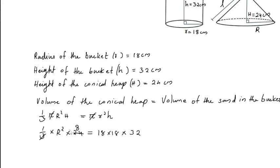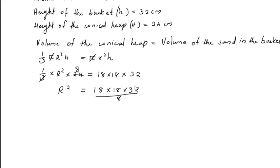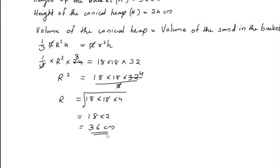We get 8. Now, r² is equal to 18 × 18 × 32 divided by 8. Cancel this 8 by 32, we get 4. r is equal to the square root of 18 × 18 × 4. Taking square root, we get 18 × 2, which is 36 cm. So the radius of the conical heap is 36 cm.